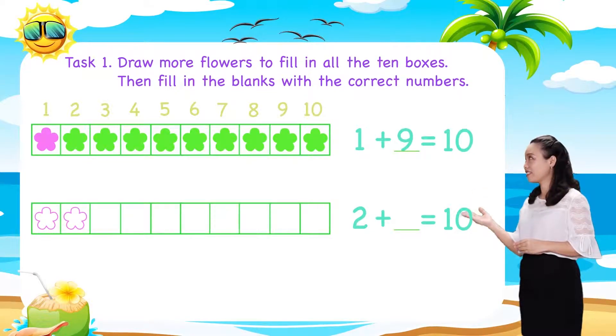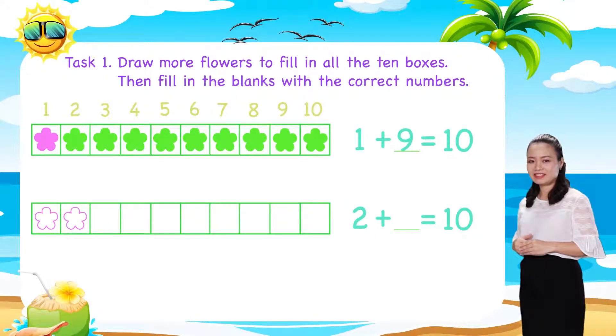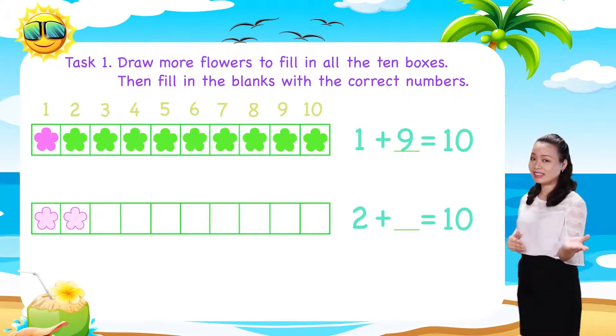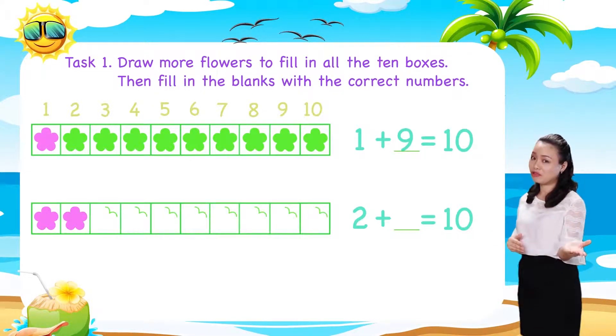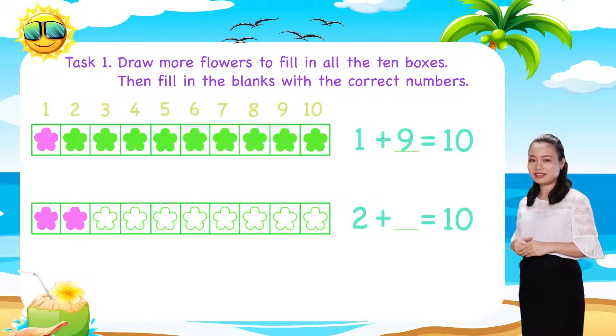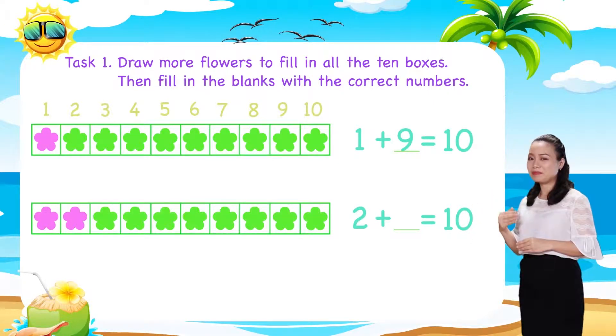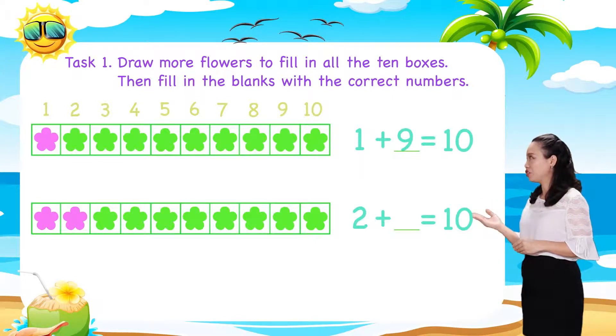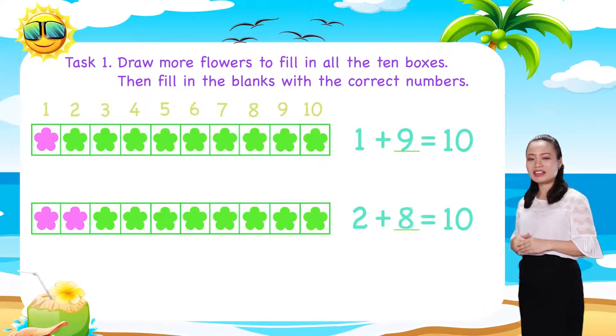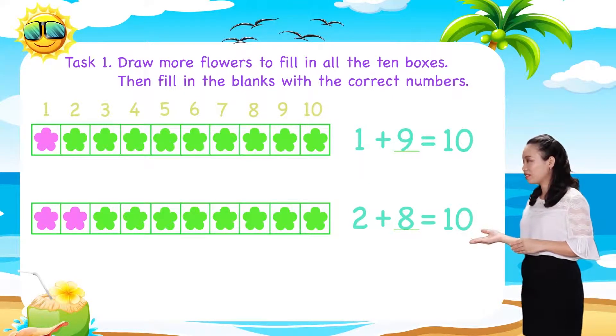Now, the second row. Here, we have 2 flowers. Let's colour them pink. 8 boxes are empty. Let's draw 8 more flowers. Colour them green. Thus, we have 2 plus 8 equals 10.